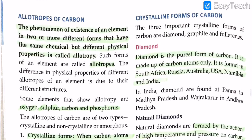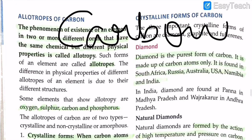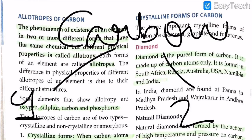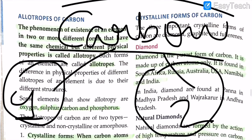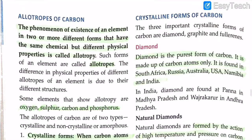Now let's move on to the allotropes of carbon. Allotropy is the phenomenon or existence of an element in two or more different forms that have the same chemical properties but different physical properties. The different forms are called allotropes. For carbon, they are called allotropes of carbon. The difference in physical properties of allotropes is due to their different structures.